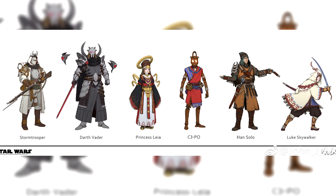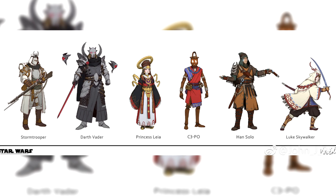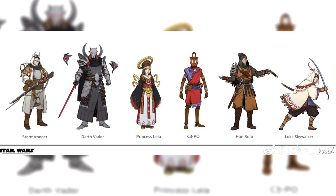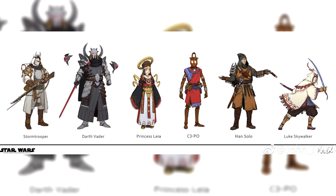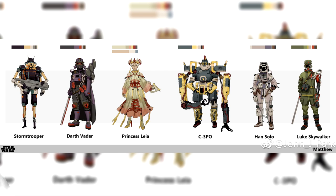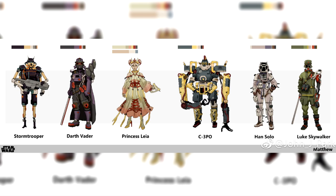The next few sets seem to be inspired by mythic and feudal Japan. One big takeaway from all of this is that no matter what the setting, Darth Vader always looks like the coolest of the bunch. As for C-3PO here, I really don't have any idea what was going through the artist's head, but the four arms could maybe be some inspiration drawn from General Grievous.